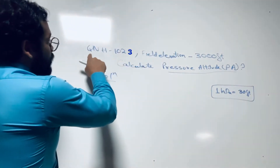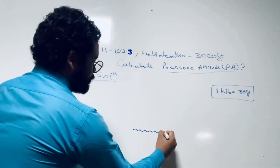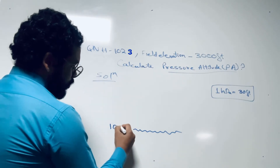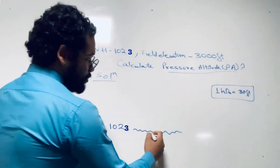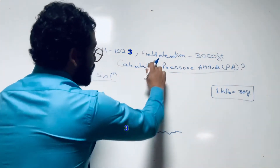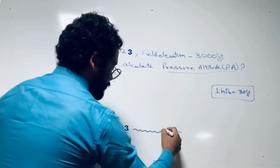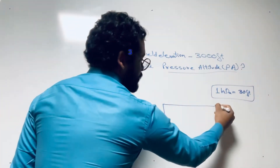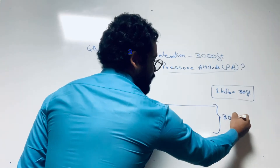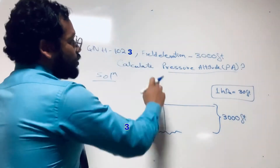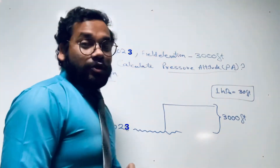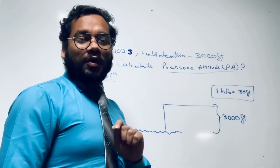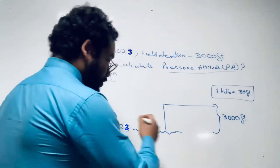Now we know that QNH is given as 1023. Suppose at the sea level the QNH is 1023 — that is given in the question. The field elevation is 3000 feet. Pressure altitude is measured from the standard pressure level, and the standard pressure is 1013.25 hectopascals. Let's assume it as 1013 for the purpose of calculation.